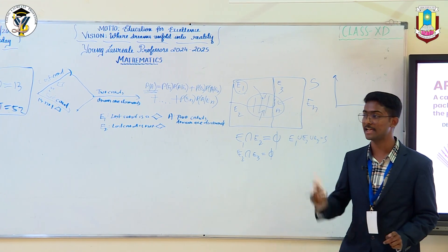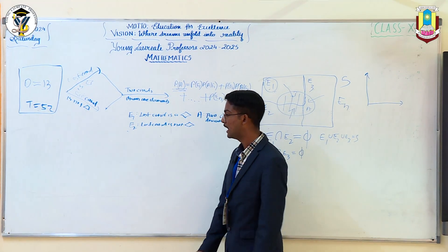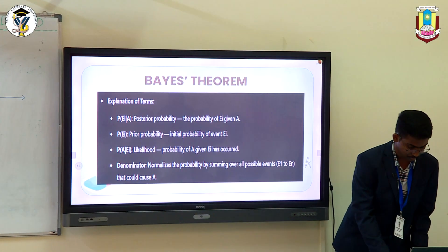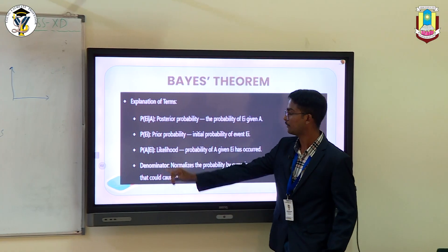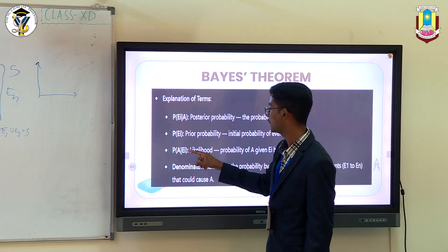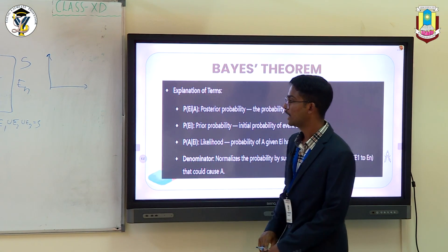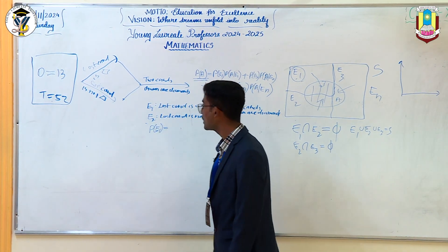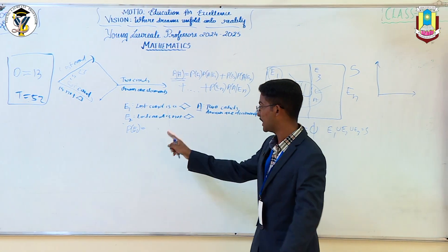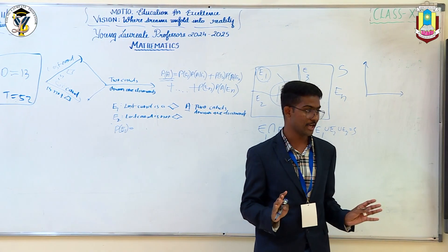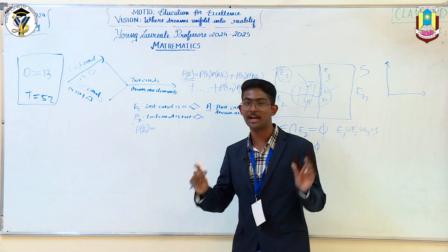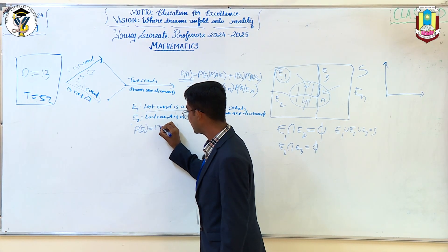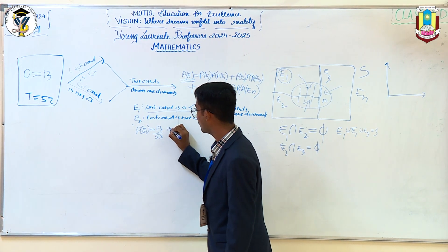The third step is to find the initial probability of your identified events and the likelihood of this event. Remember what likelihood is — that is the probability of the event which has already occurred given your event. First you have to find the initial probability of event E1. Keep in mind that no conditions have been applied on E1 yet. You have a pack of 52 cards, one has been lost, you have to find the probability of it being a diamond. You have 13 diamonds in this pack. So the probability of the lost card being a diamond initially is 13 by 52 or 1 by 4.